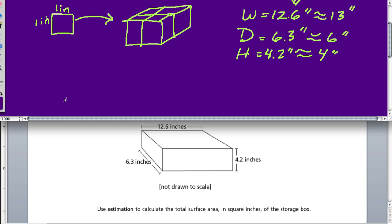On the top here, we have this face. It's 12.6 inches by 6.3 inches, but we're using 13 inches by 6 inches. So this top face will equal 6 times 13, 6 times 10 is 60, 6 times 3 is 18, so that's 78 inches on the top. But that also equals the bottom. So the bottom also equals 78 inches.